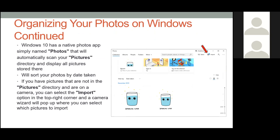Windows 10 also has a native Photos app simply called Photos that will automatically scan your Pictures directory and display all the pictures stored there. It sorts your photos by the date they were taken automatically. If you remember when you took a picture, you can search for that date and they'll show up. If you have pictures on a camera, you can select the Import option at the top right corner and a camera wizard will pop up to select which pictures to import — of course with a USB cable connected to the camera.